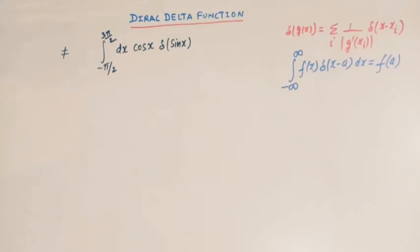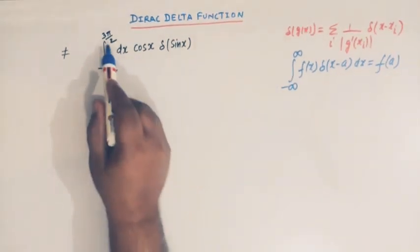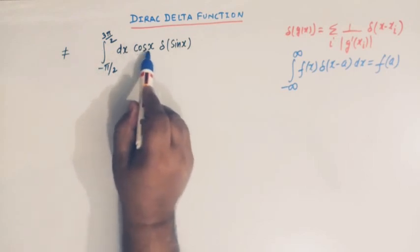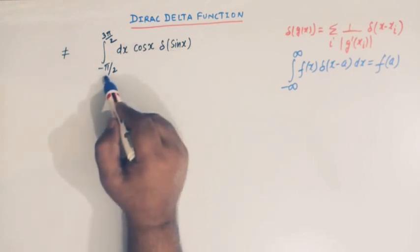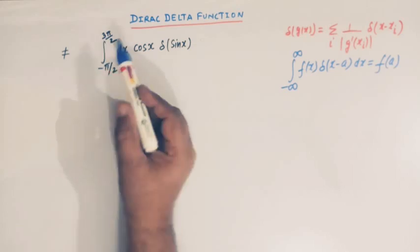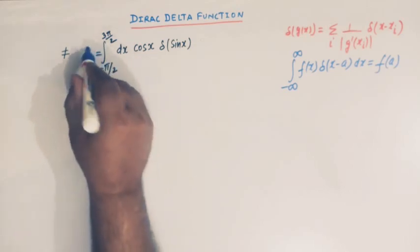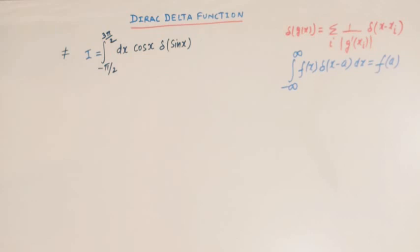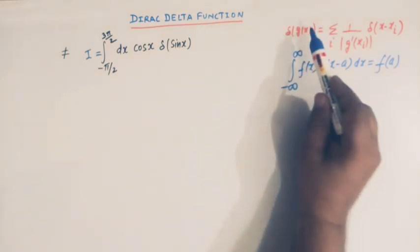Hello viewers. In today's class we are going to take up one more integral involving the Dirac delta function. In our previous videos we have solved some problems related to the Dirac delta function. Here we will solve this problem: we have to integrate cos(x)·δ(sin x) from -π/2 to 3π/2. Let us call this integral I.